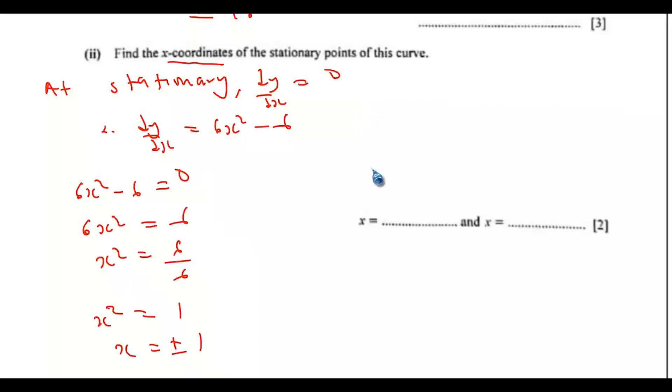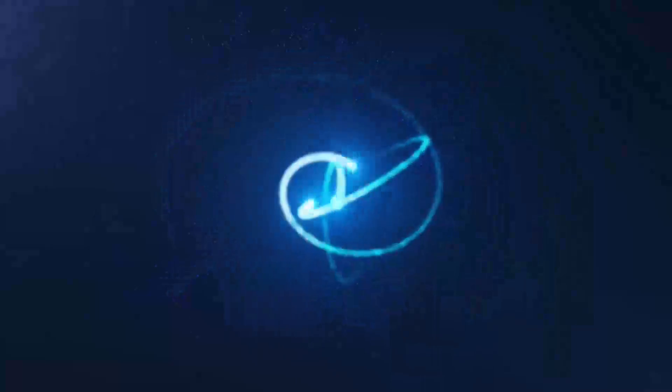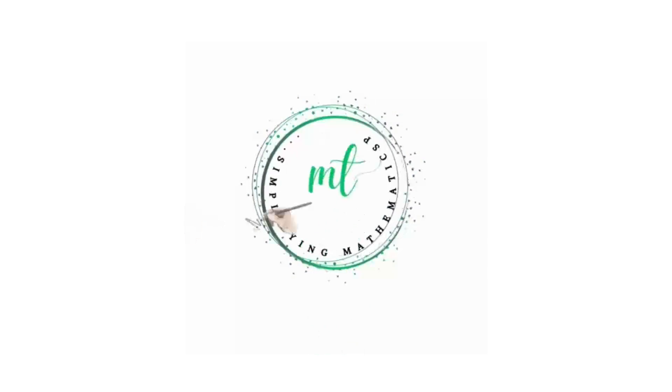So x will be at x equals positive 1 and x equals negative 1. This is the end of the solution to the Cambridge IGCSE Mathematics Paper 4-2, written in May/June 2024. Thank you.